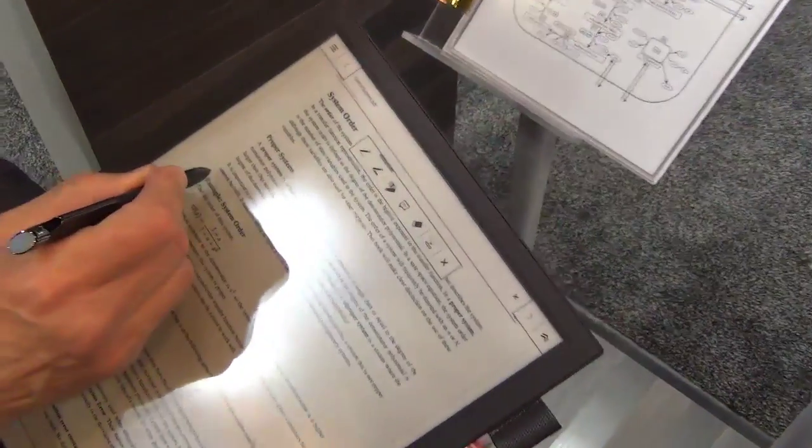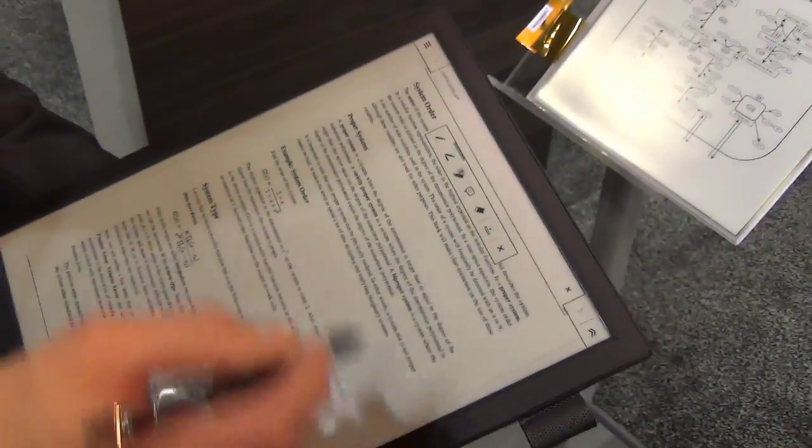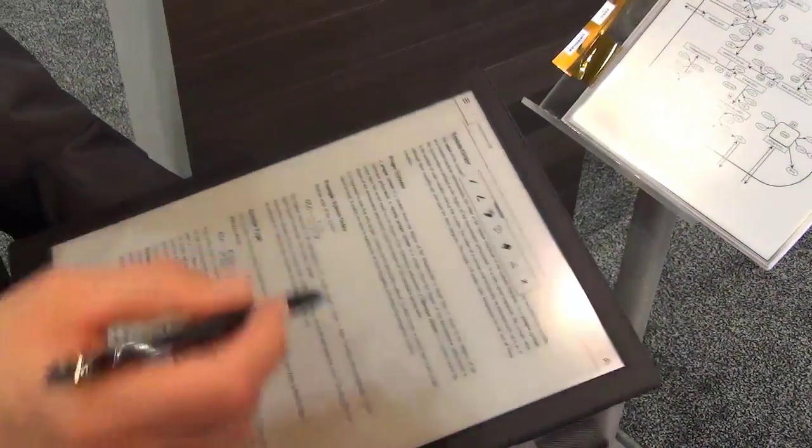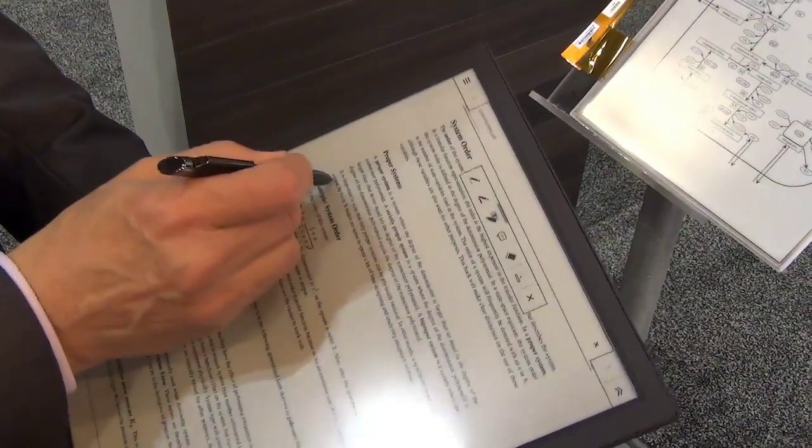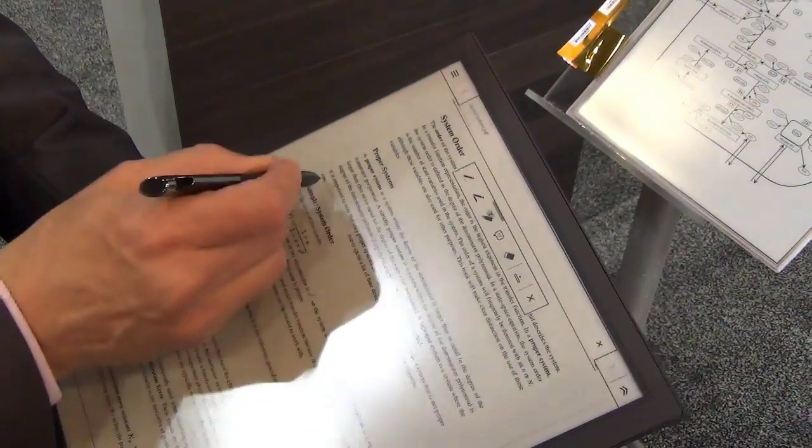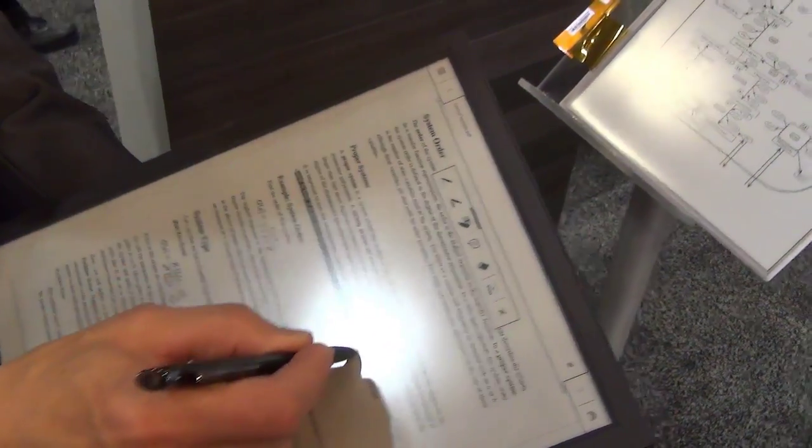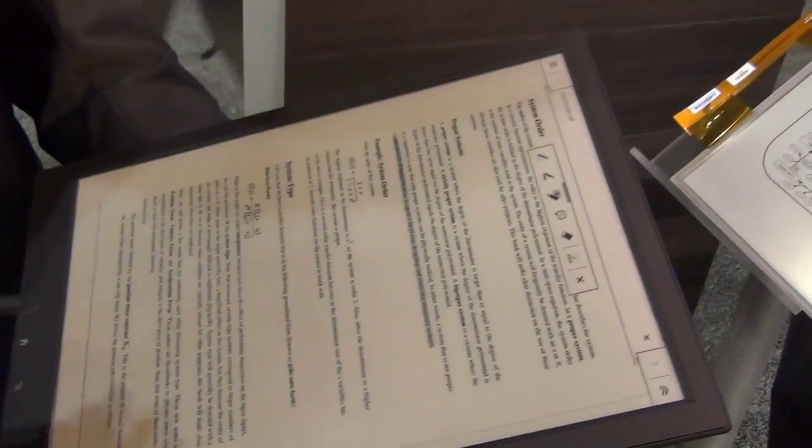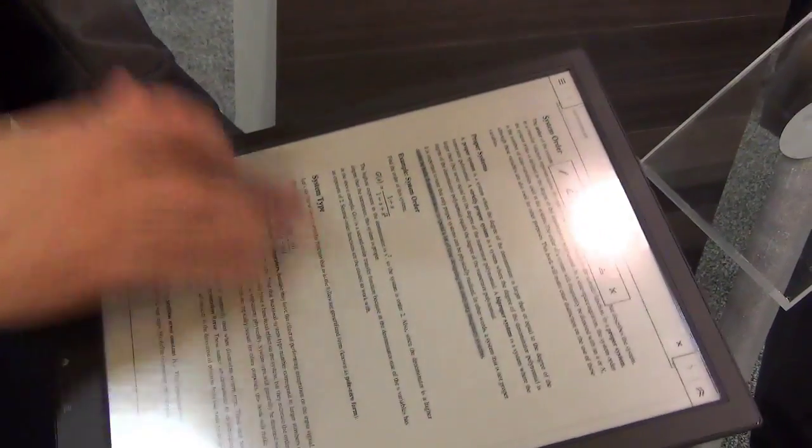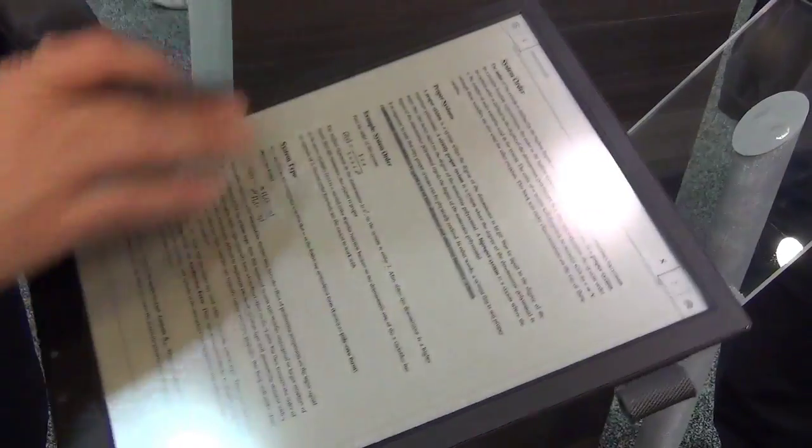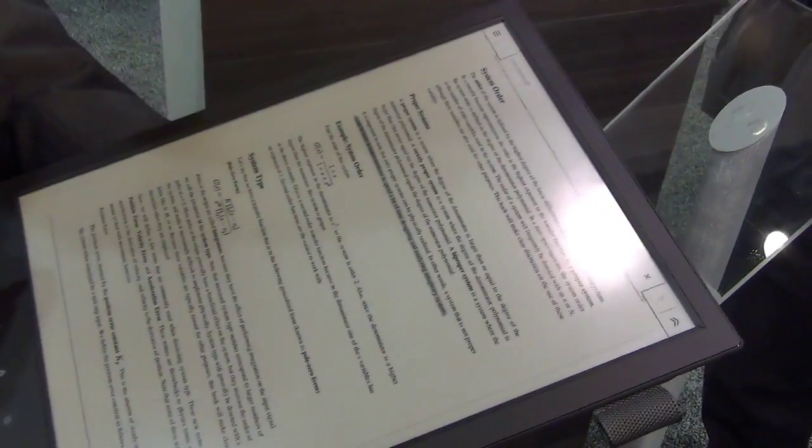I could choose the pen and I could choose to annotate. There we go. I could choose to highlight different portions of the text. And it actually remembers that. So I can turn the page, and as I go back, that highlighted text is still there.